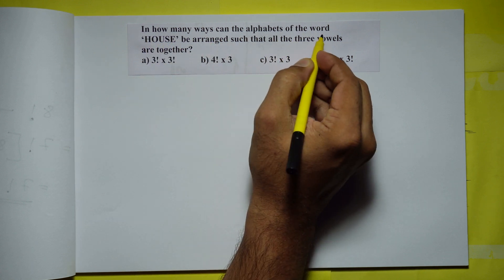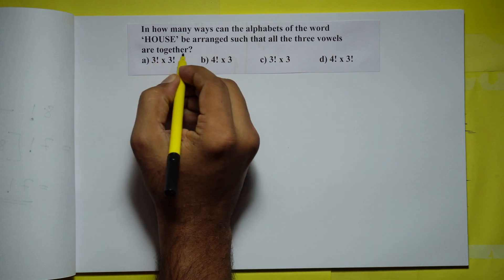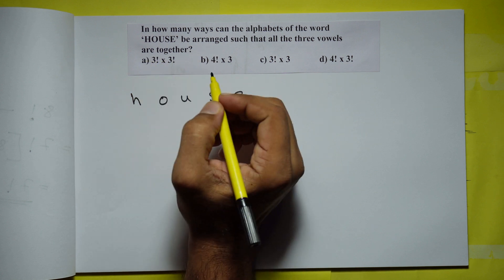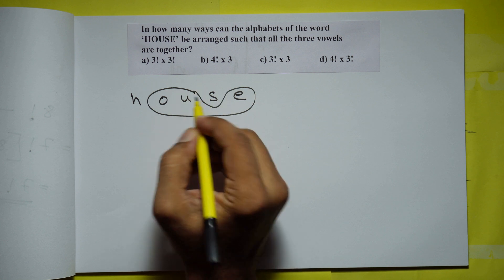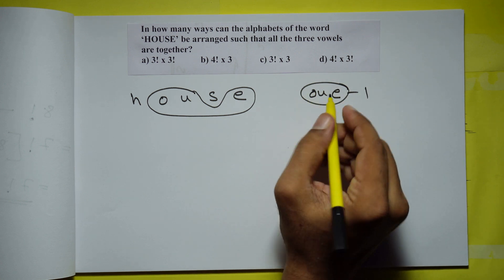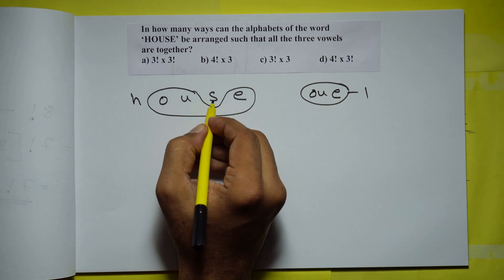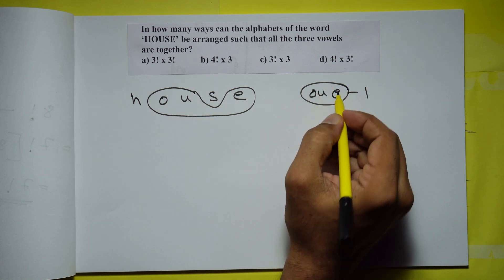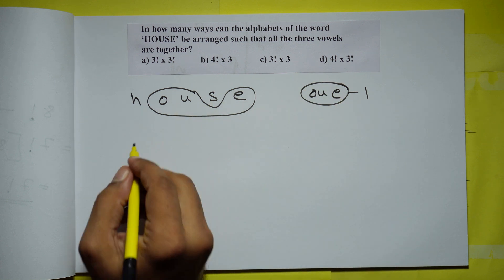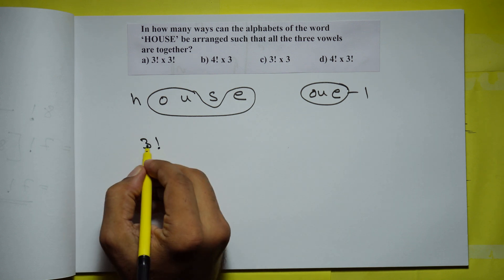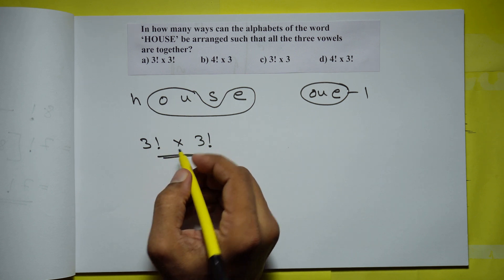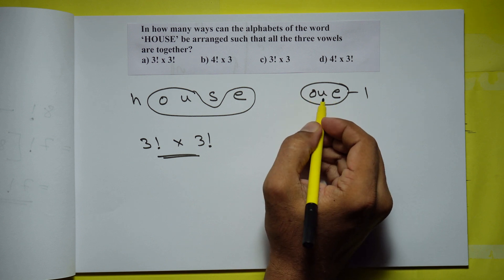In how many ways can the alphabets of the word HOUSE be arranged such that all three vowels are together? The vowels are O, U, and E. Bring them together and treat them as one alphabet. Now we have H, S, and this one combined alphabet — effectively three units, which can be arranged in 3! ways. In each arrangement, O, U, and E can be interchanged among themselves in 3! ways. So the total is 3! times 3! — option A.